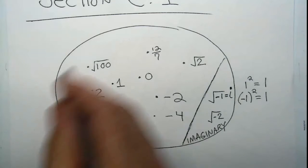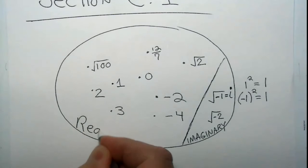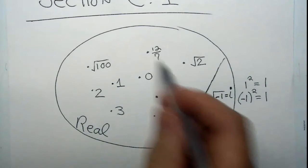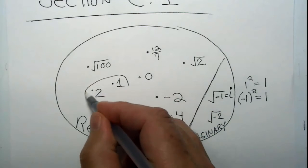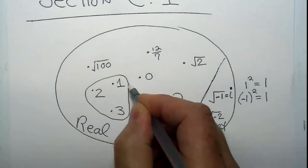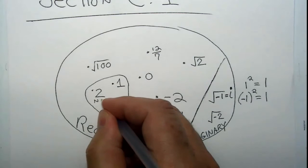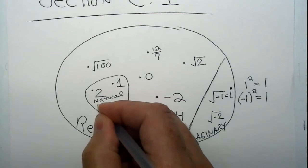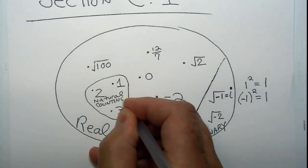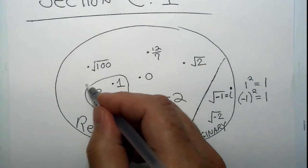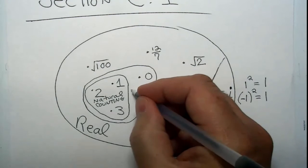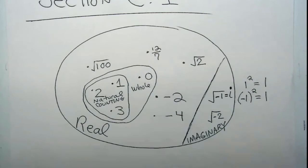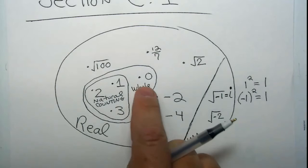Over here, these are all real numbers — they really do exist. Within the set of real numbers, there are some subsets. Probably the smallest subset would be the natural numbers or the counting numbers. If we include 0, that's a set as well, and we call this the set of whole numbers — basically all the natural or counting numbers including 0.